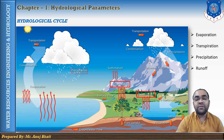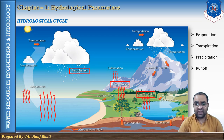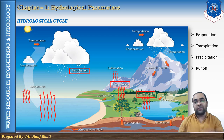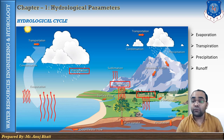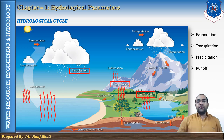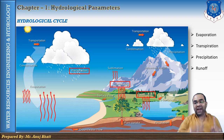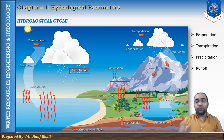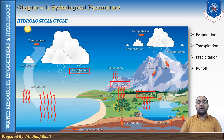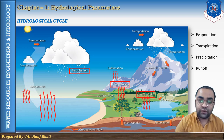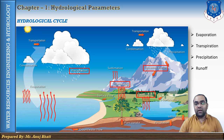Precipitation may be defined as the fall of moisture or water or snow from the atmosphere to the earth's surface in any form — it can be water or snow. Precipitation is classified into two categories: liquid precipitation and frozen precipitation. In liquid precipitation there is rainfall; in frozen precipitation there can be snow, hail, or freezing rain.